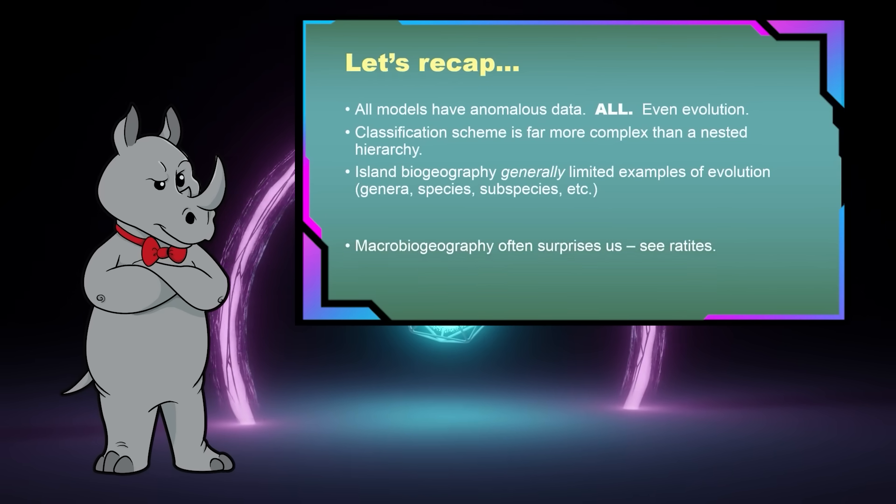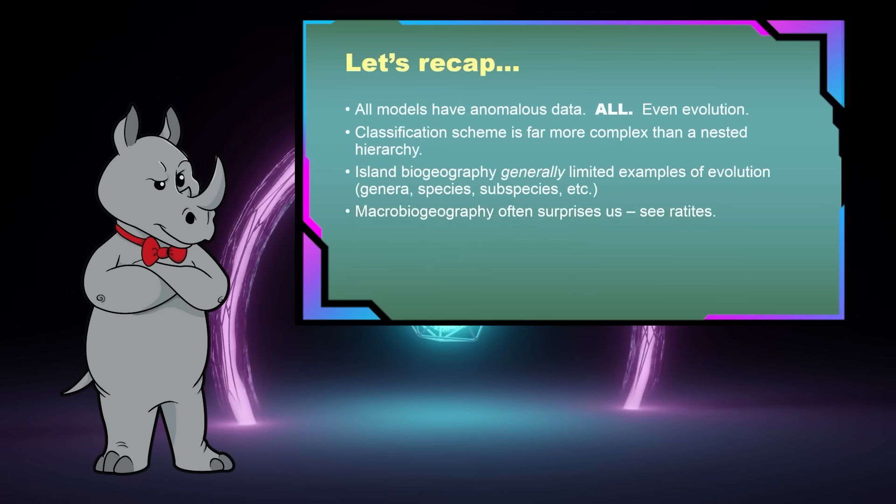If we look at macro biogeography, the patterns of species across the planet, things get really muddy and muddled. And sometimes we're in for really big surprises, things like the ratites. I gave that example in the episodes. I suggest you go check that out. It's peculiar and weird, and I'm not sure what to think about it, but it doesn't really fit very well with the simple evolutionary explanation because things are always more complicated than they seem.